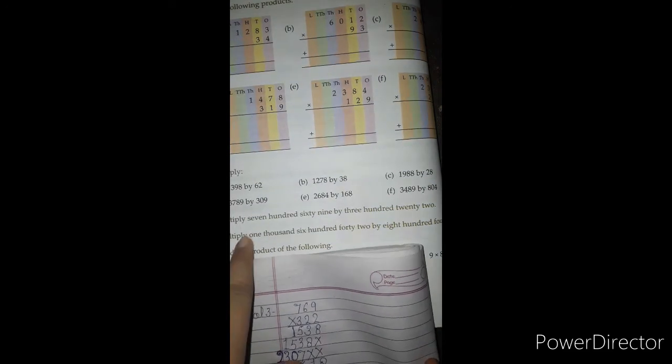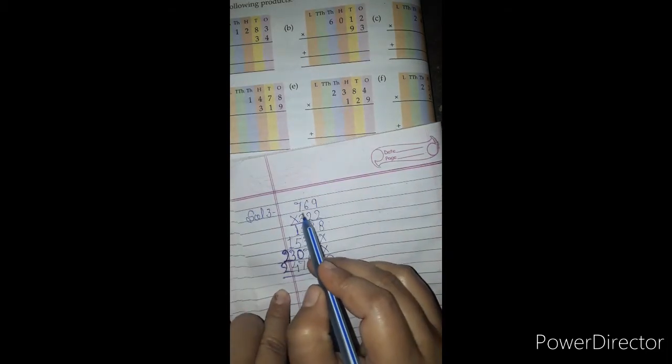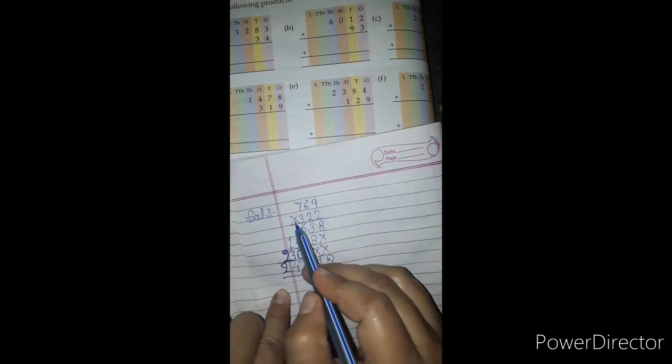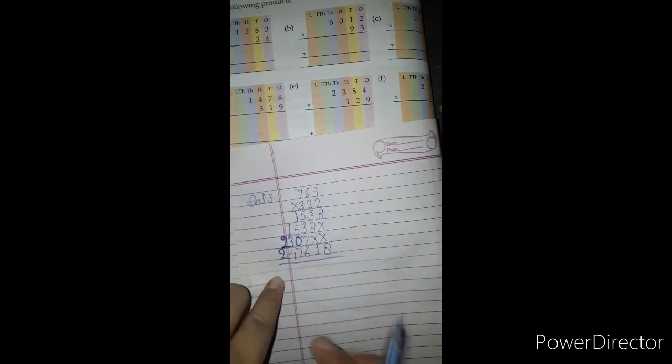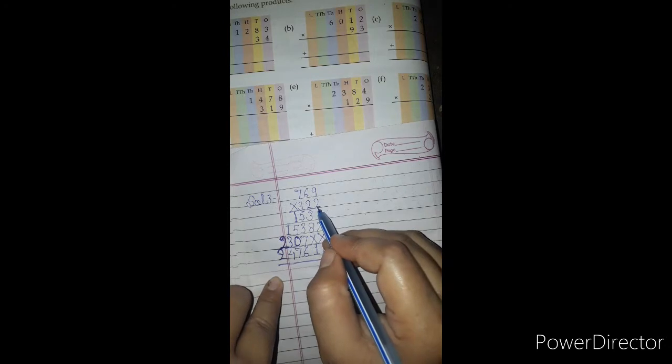Question number 3, multiply 769 by 322. So, first of all, we write this number in numbers. So, 769 multiply by 322. So, start the process.